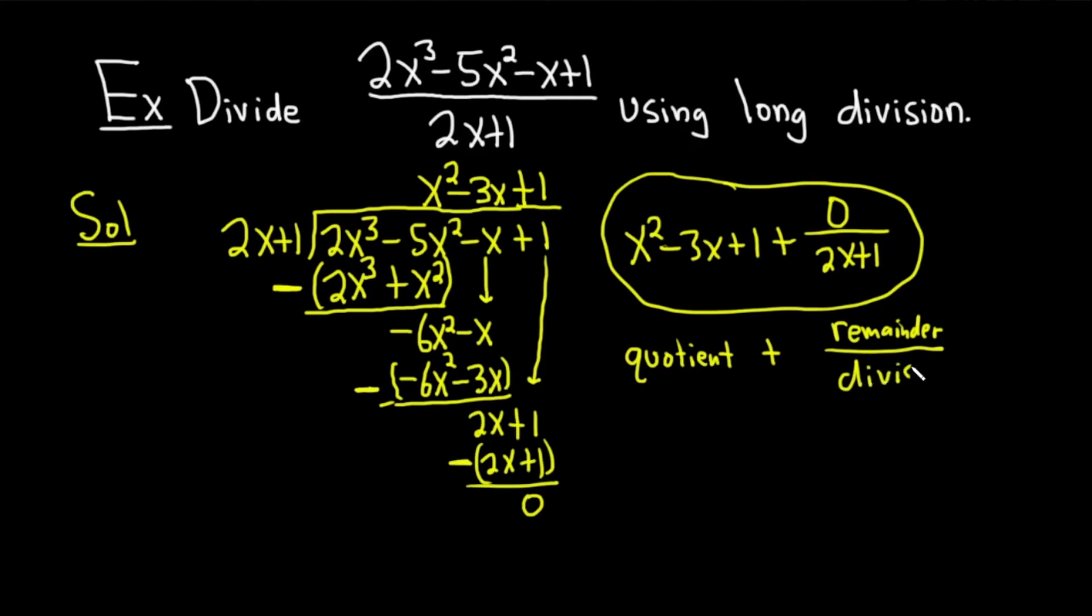Sometimes people ask you for the individual pieces. So if someone said, hey, what's the remainder? You would say 0. They said, hey, what's the divisor? You would say 2x + 1. And if someone asked you what the quotient was, it would be x² - 3x + 1. Long division takes a lot of practice and patience. Hopefully this video has been helpful to you.